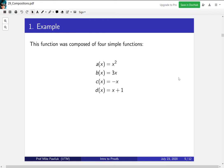Formally, this function is composed of four simple functions: x², 3x, -x, and x+1. If we were to write out our function, we performed a, then we performed b on that, then c on that, and then d on that. So our function -3x²+1 is d of c of b of a of x, and then a whole bunch of brackets.